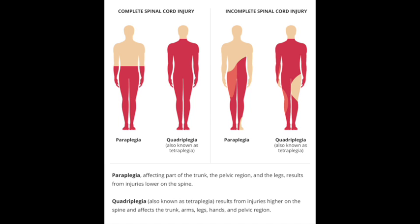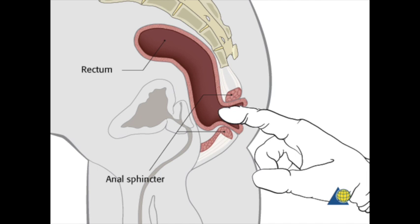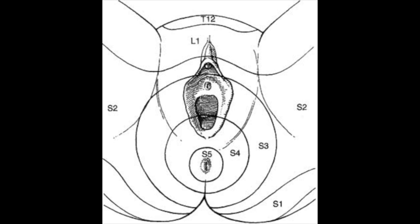Step 4: Determine whether the injury is complete or incomplete. This relates to whether or not there is sacral sparing. If there is no voluntary anal contraction, if all the sensory scores for S4 and S5 are zero, and if there is no deep anal pressure, the injury is classed as complete.